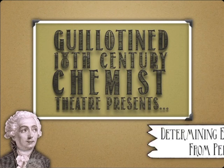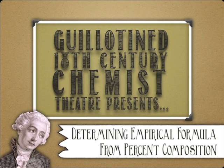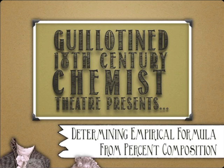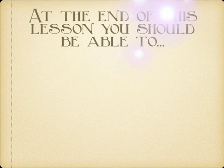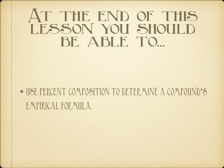Hello and welcome back to guillotine 18th century chemist theater. Today we are going to build off last lesson where we determined the percent composition of the formula. Now what we're going to do is, given the percent composition, back calculate the empirical formula. Remember, the empirical formula is the lowest whole number ratio of the subscripts.